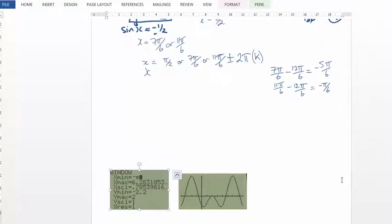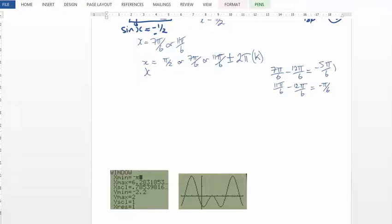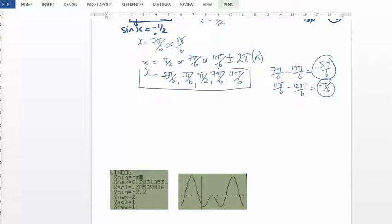We've got those 2 solutions to add onto the ones we've already found. Minus pi over 6, 5 pi over 6, and minus pi over 6. So all of our solutions are going to be minus pi over 6, minus 5 pi over 6 is the furthest one away. Minus pi over 6, pi over 2, 7 pi over 6, and 11 pi over 6. And they are all the solutions that fall in the domain minus pi to 2 pi.